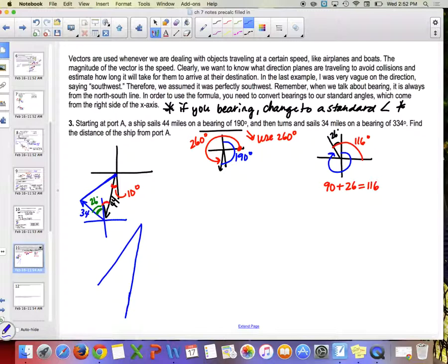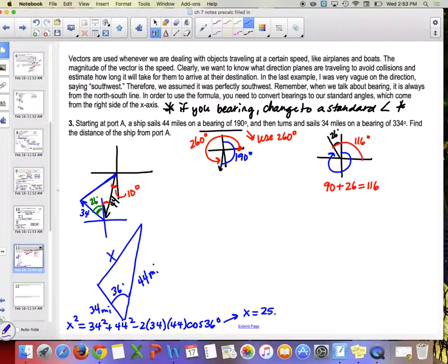This angle right here that I'm drawing in red, what angle is that? 10, it's 10 degrees right, because it was 190, it was 10 degrees past 180. This angle right here ends up also being 10, think about geometry, alternate interior angles, totally 10. What about this one, do you know what angle that is? 26, yeah 26. So you end up getting this picture where it says find the distance of the ship from port A where you have this picture right here. You have 44 miles here, you have 34 miles here, and this ends up being 36 degrees because it was the 10 plus the 26, and you're asked to find X.